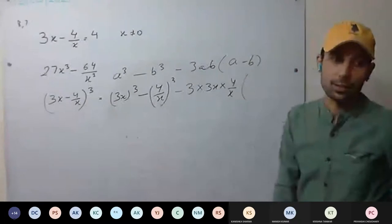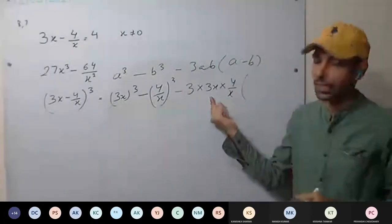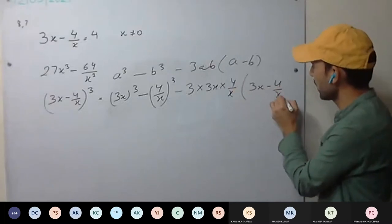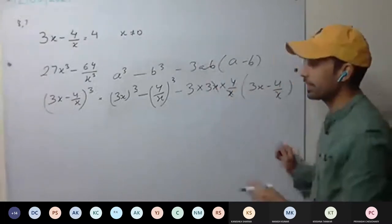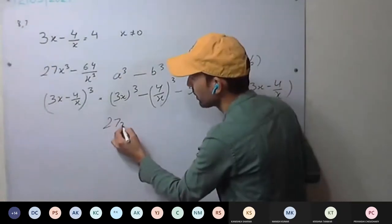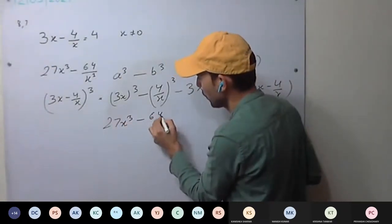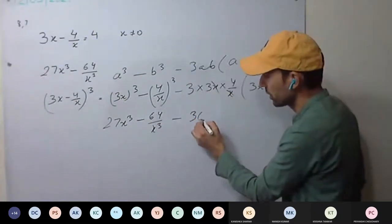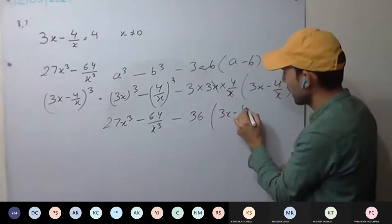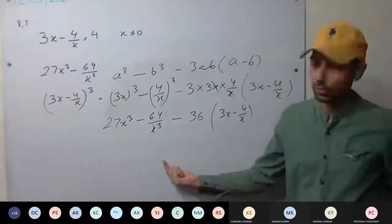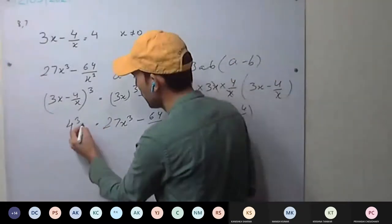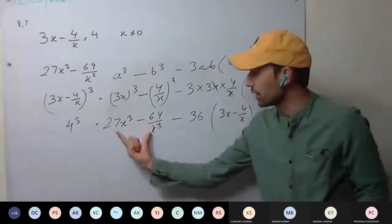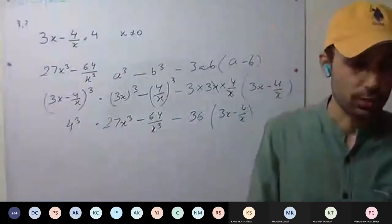Always complete the steps — even I make mistakes when I avoid steps. So A minus B is 3x minus 4 upon x. X gets cancelled. Now: 27x cube minus 64 upon x cube minus 3 into 9 into 4, and 3x minus 4 upon x. It's easier to calculate 4 cubed. It is 4 into 36. Calculate this value and the rest is just addition.